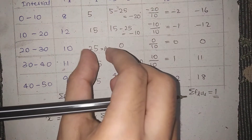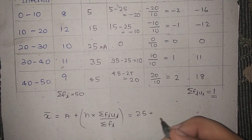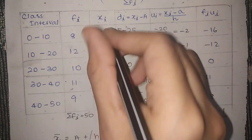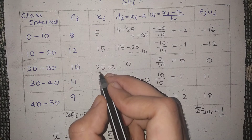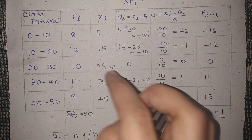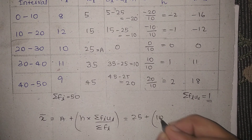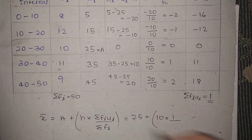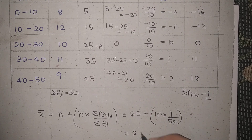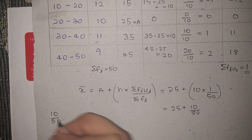Now let's take the equation for the mean. Mean equals a plus h into sigma fi·ui divided by sigma fi. We assumed a equals 25. Mean equals 25 plus 10 into 1 divided by 50. That gives 25 plus 10 by 50, and 10 by 50 equals 1 by 5, which equals 0.2. So mean equals 25 plus 0.2.